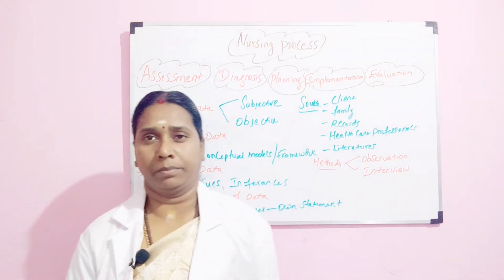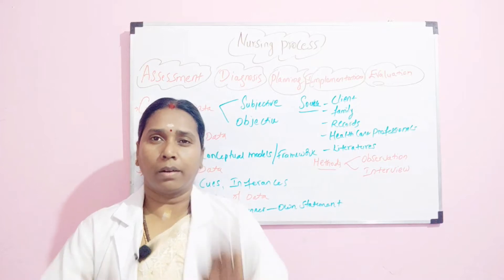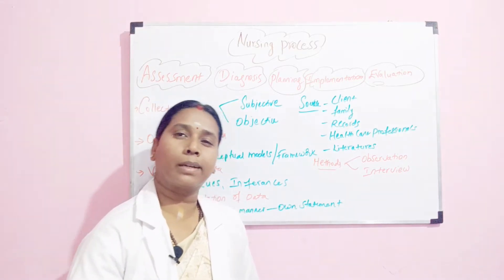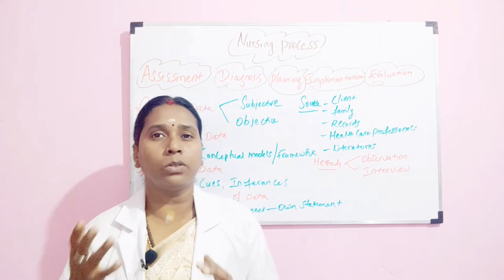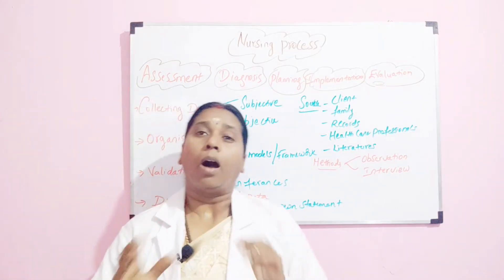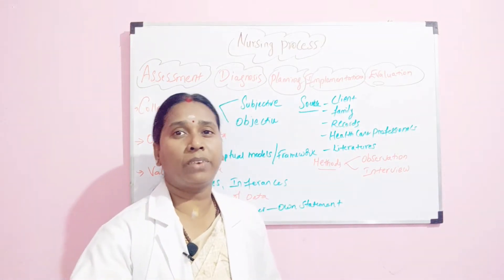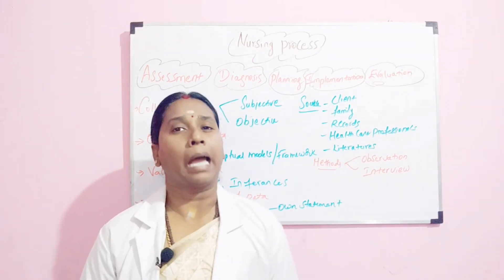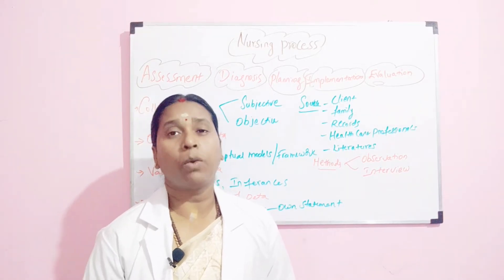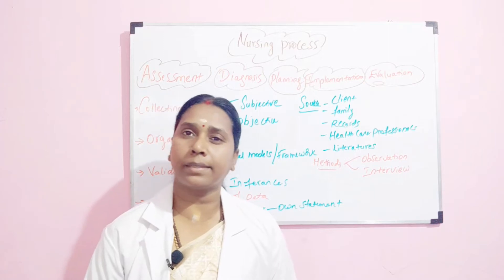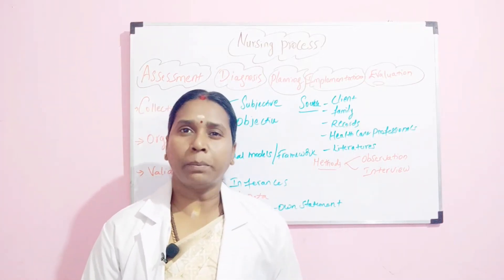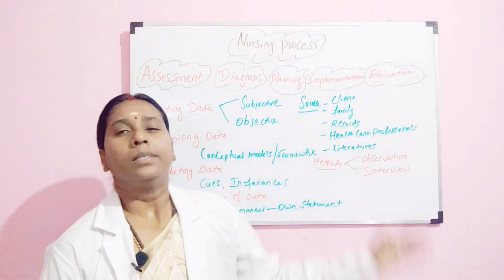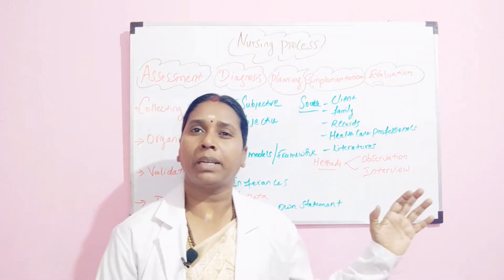Then comes implementation. You may have planned around 10 things, but not everything is applicable for every patient. Out of 10 plans you may be able to implement only 5. That is called implementation. Whenever you do an implementation you must have a rationale — you must be able to justify why you are doing this for the patient, because in nursing you do nothing without a rationale.